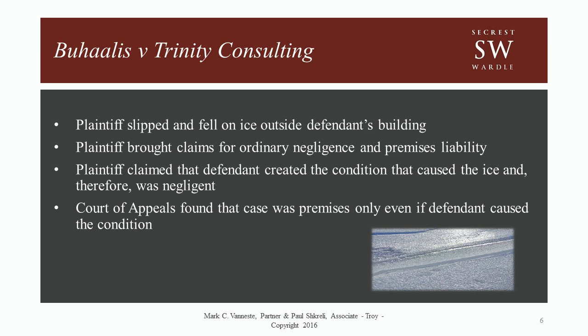The next example: a plaintiff alleged the defendant was negligent in inviting festival attendees onto defective and dangerous land where they encountered an uneven sidewalk. The Court of Appeals determined that the plaintiff's cause of action was found in premises liability and not ordinary negligence. The next example: a third party was cutting down a tree with a chainsaw as the plaintiff and the defendant held ropes to pull it down, and the defendant ran away, causing the tree to fall on the plaintiff. The Court of Appeals determined that the plaintiff's claims sounded in both premises liability and ordinary negligence.